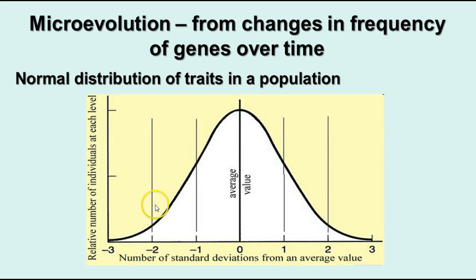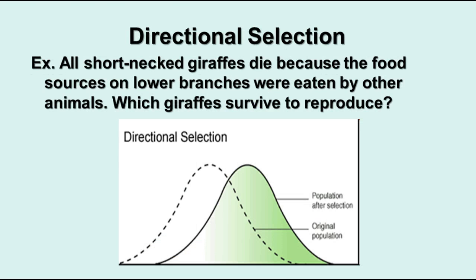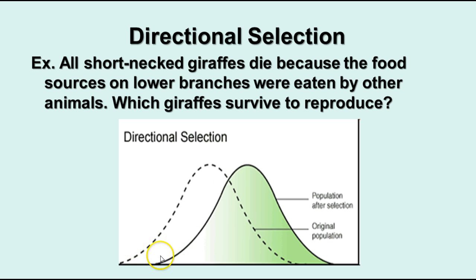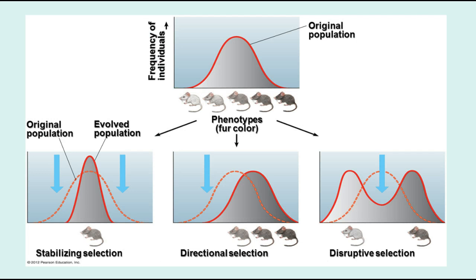If conditions make survival at one end of the spectrum disadvantageous, we see directional selection. For example, if giraffes had shorter necks and food on lower branches was eaten by other animals, shorter-neck giraffes would die off, leaving only longer-neck giraffes to reproduce and pass on that trait. Over time, the normal distribution of individuals in the population would shift from the original average to a new, higher average. So competition for food on lower branches would change the distribution of the giraffe population in an upward direction.